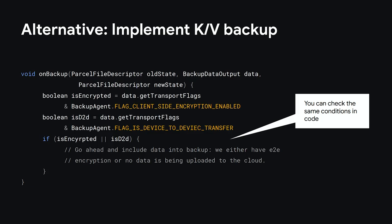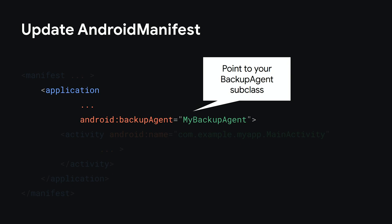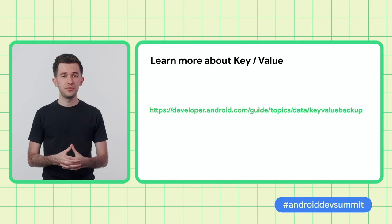Now let's briefly look at the alternative I mentioned earlier, which is key-value backup. Here you need to extend a class called BackupAgent and implement the behavior you'd like on backup and on restore. As part of the backup event, you can check conditions like the presence of end-to-end encryption and whether the operation currently happening is a cloud backup or a device transfer, to better determine which key-value pairs should be included. When your agent is ready, don't forget to point to it in the Android manifest. If you're interested in key-value backups, you can follow the link on this slide for a step-by-step guide on implementing them.